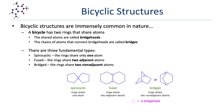In a fused bicyclic compound, the rings share two adjacent atoms. If we look at the example, we see two fused six-atom rings. The two rings share two adjacent carbons — these circled atoms are the bridgeheads. There are three distinct bridges that connect the two bridgeheads: a four-atom bridge to the left, a four-atom bridge to the right, and a zero-atom bridge in the center.